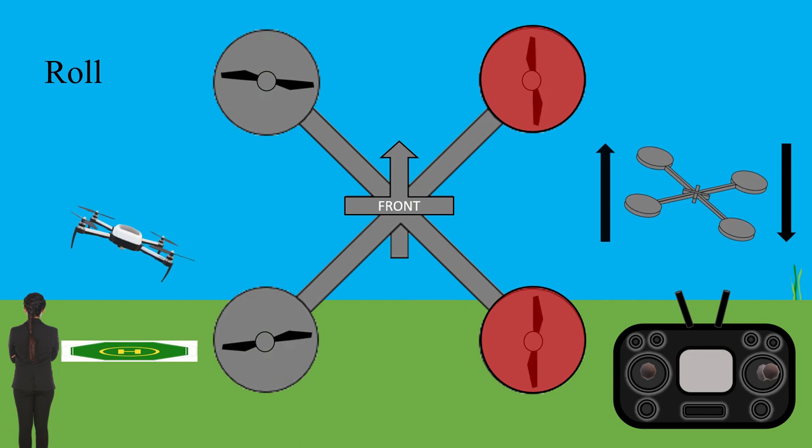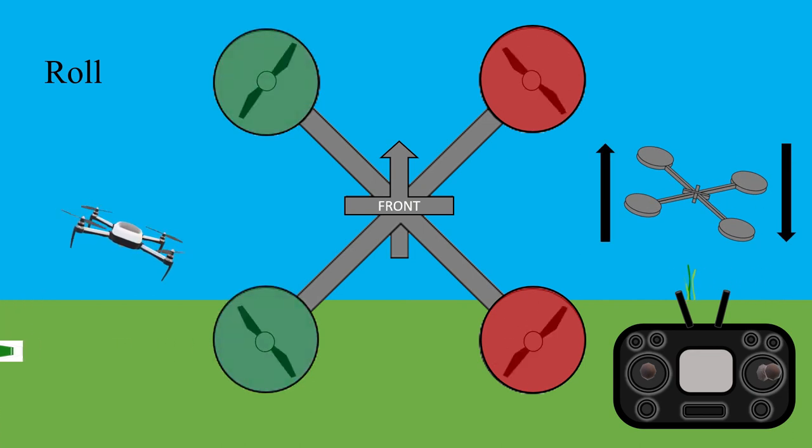The higher rotation speed causes more thrust on the left side of the drone. A decrease in thrust on the right side of the drone allows the drone to dip to the right and change its direction of motion.